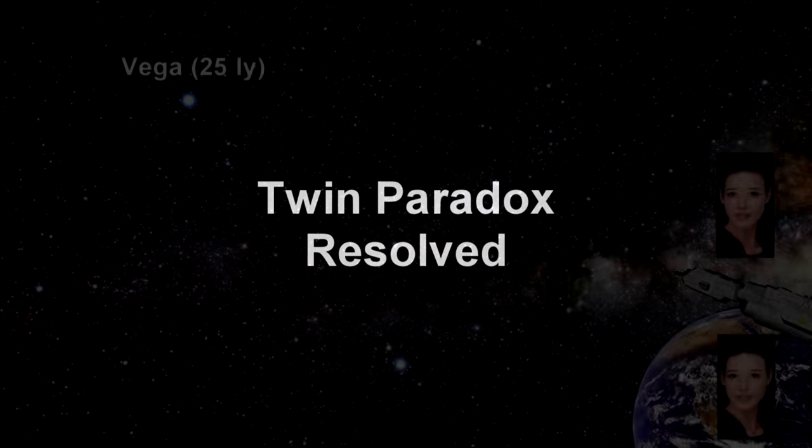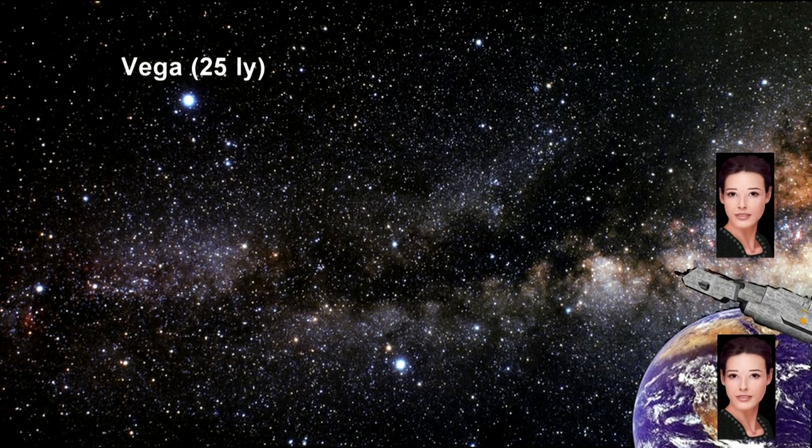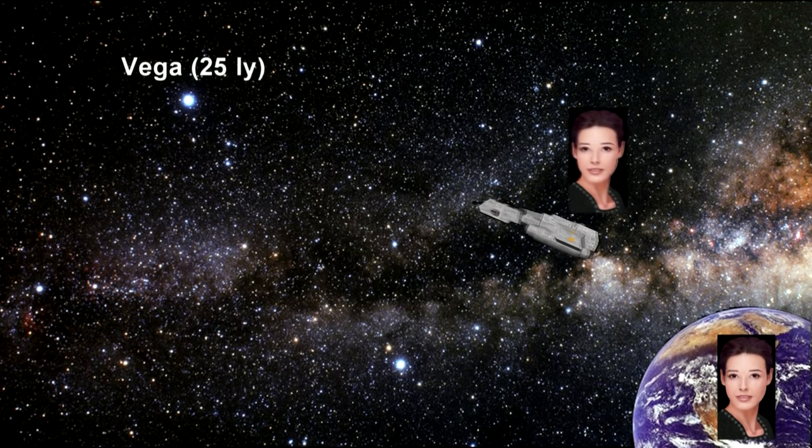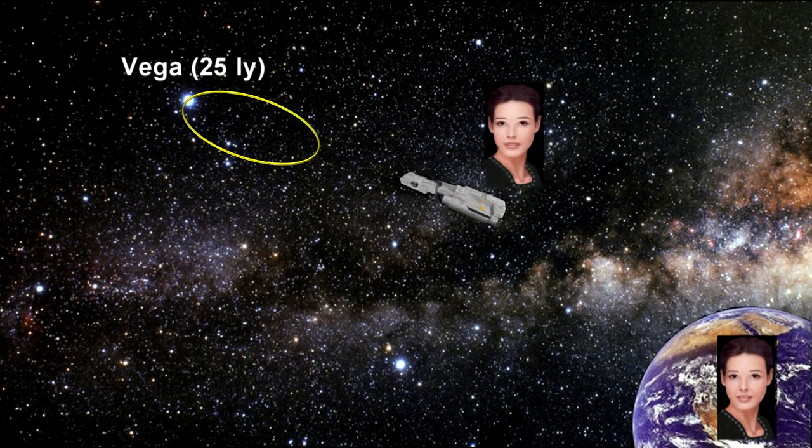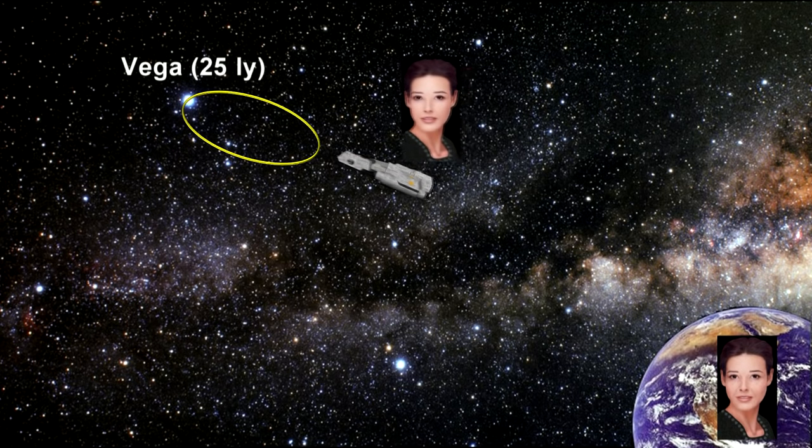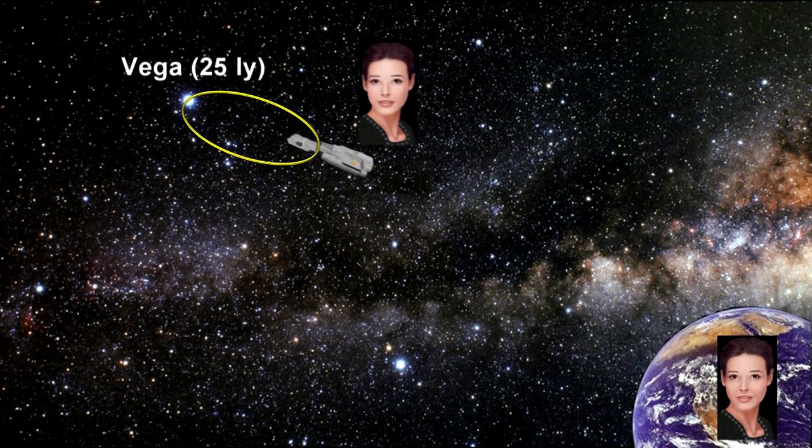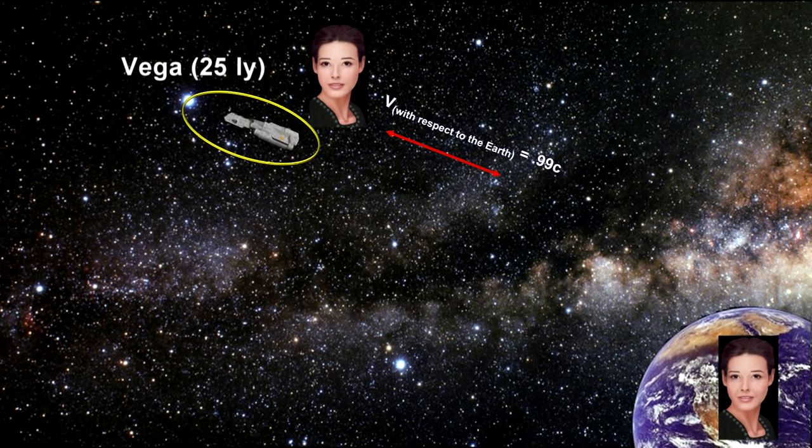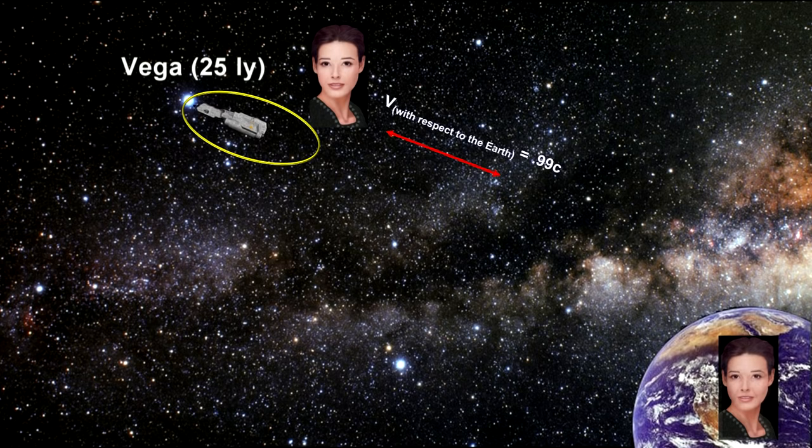Gravitational time dilation is also the answer to the twin paradox that we covered in the previous segment on special relativity. The key interval is at the halfway point. As the spaceship approaches Vega, it decelerates to a stop and then re-accelerates back to the Earth. The traveling twin finds that she is in a gravitational field.